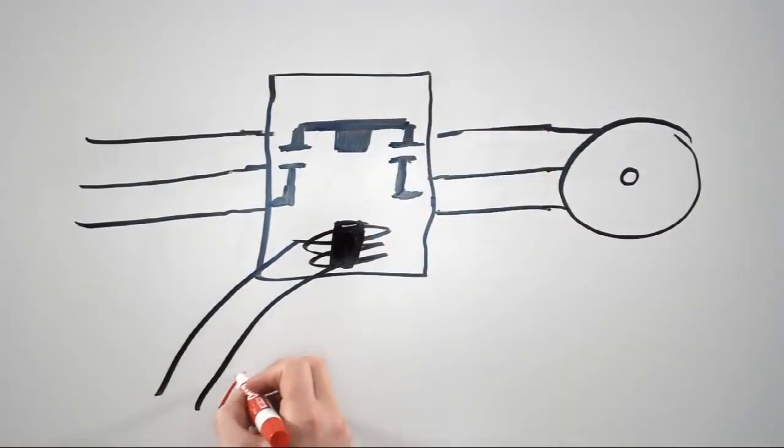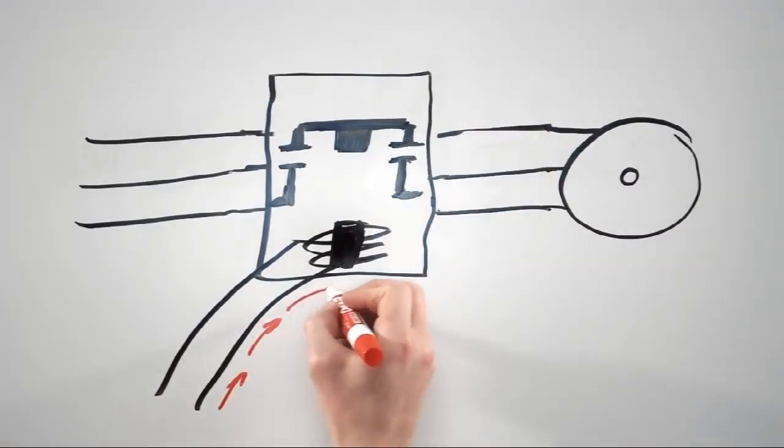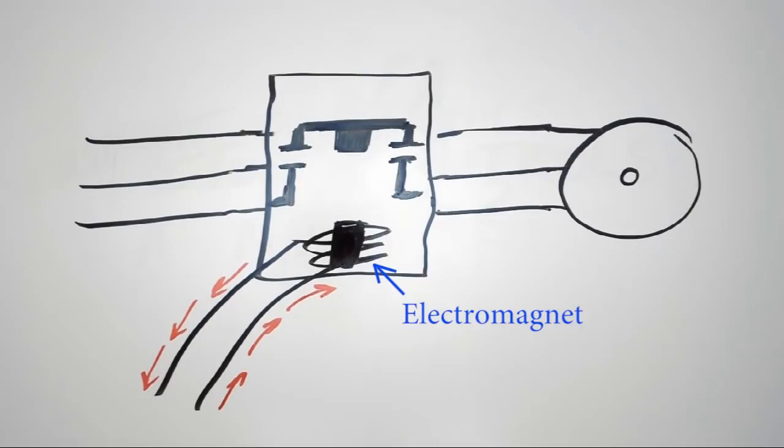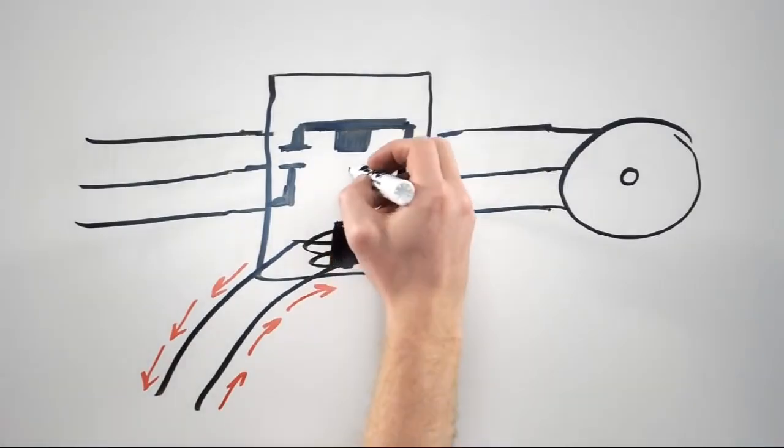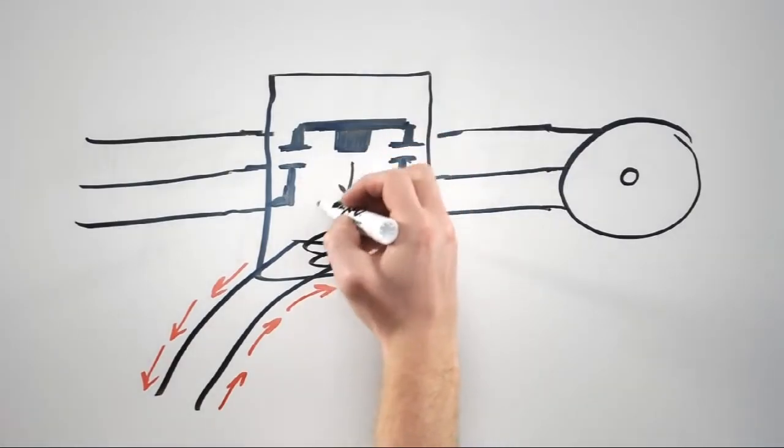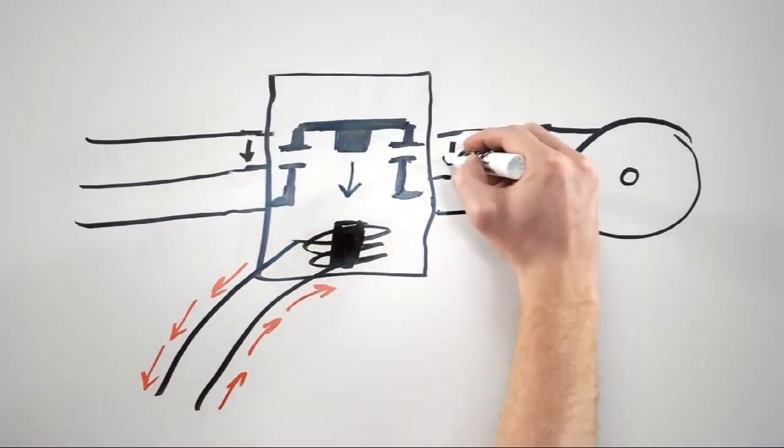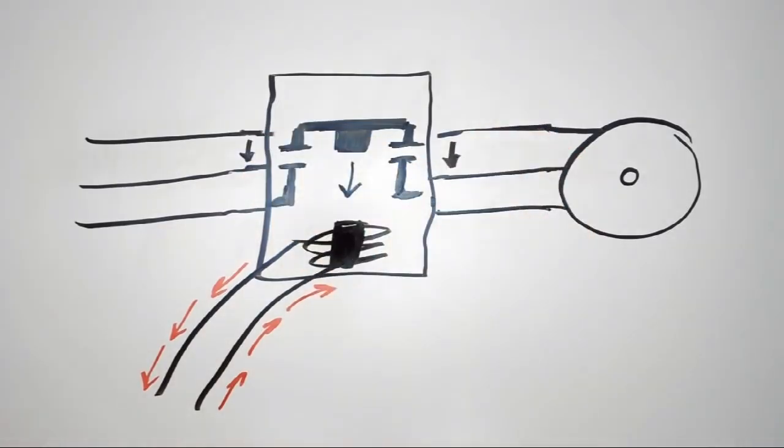When you apply an electric current through this coil of wire, you end up turning the bottom piece of metal into a magnet. The fancy word for this is an electromagnet. When you've turned on the electromagnet, it attracts the top piece of metal, which is part of the armature, and pulls it down, which in turn closes the electrical contacts on both sides. When those contacts close, it allows current to pass through the contactor and down to the motor.